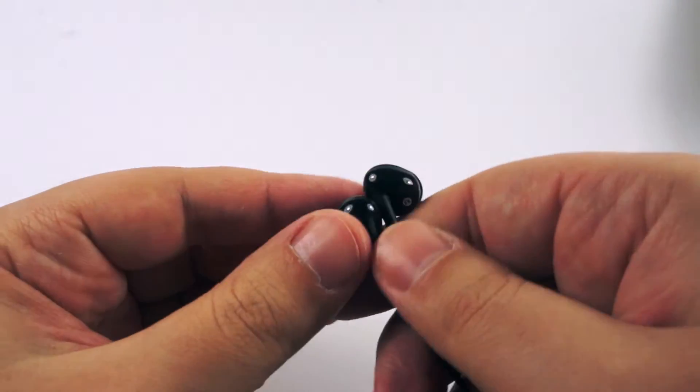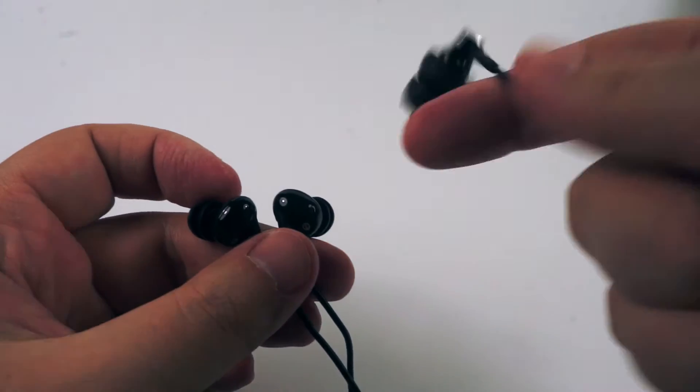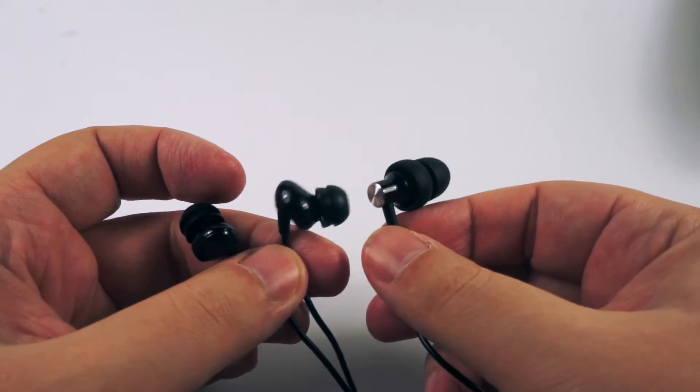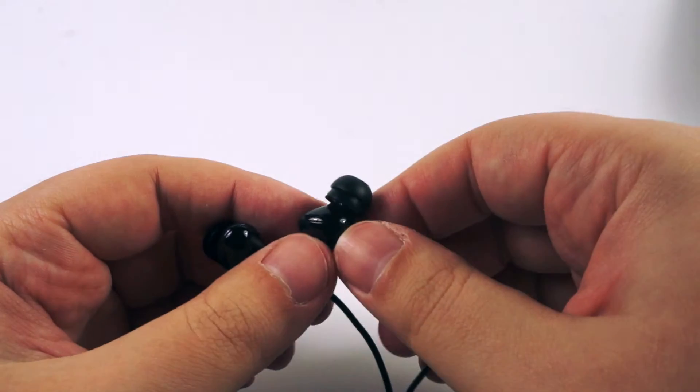As you can see they are very small. Let me show you model RAE 600 to compare sizes. They are small and they will fit inside your ear.